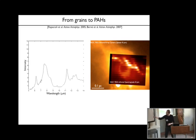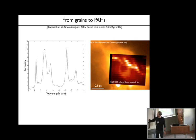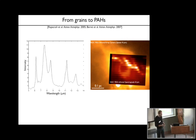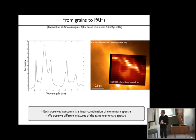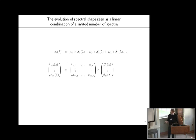In particular, you can see that the underlying continuum seems to decrease, and that the ratio between this band and this band changes when you get closer to the star. The working hypothesis we have based on this observation is that each one of these observed spectra is in fact the result of a linear combination of only a limited number of elementary spectra, and that what we observe is different mixtures of the same elementary spectra.